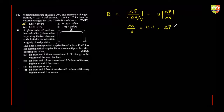Delta P is also given. Delta P is P2 minus P1, so that is 1.64 into 10 raised to power 4 Pascals.